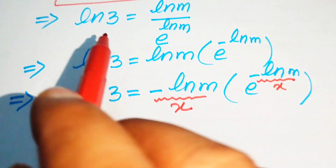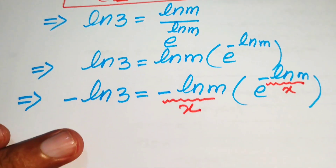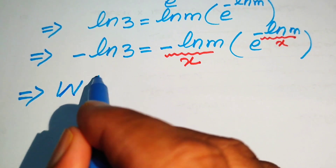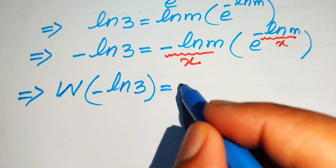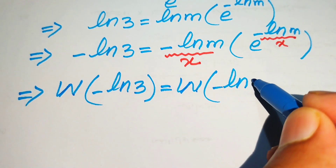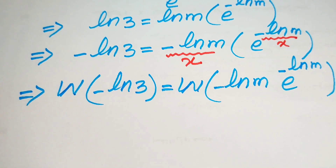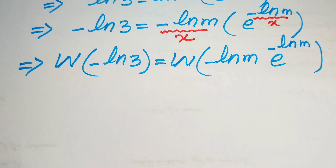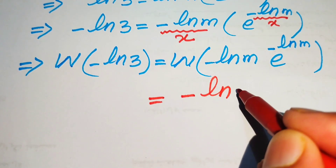The right-hand side is now in the form of the Lambert W function. This is the right time to apply W to both sides. Applying W, we get: W of minus log 3 equals W of minus log m times e to the power of minus log m. Using the definition of W, the output of this function is minus log m.